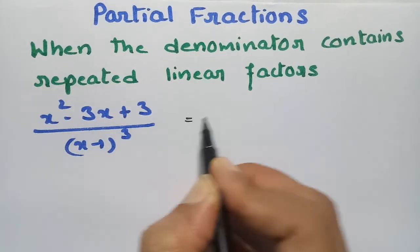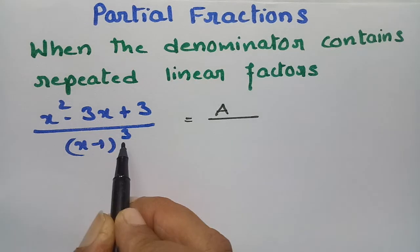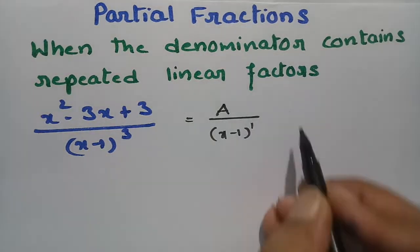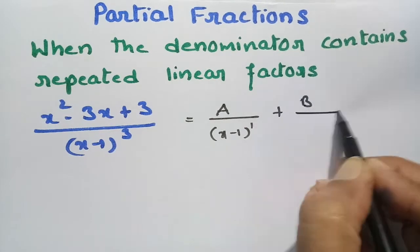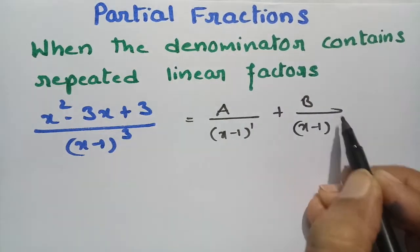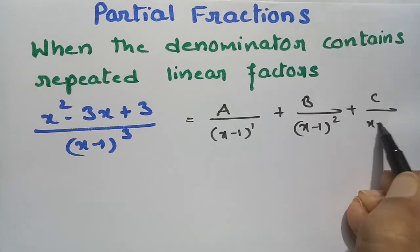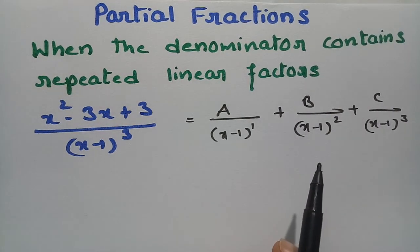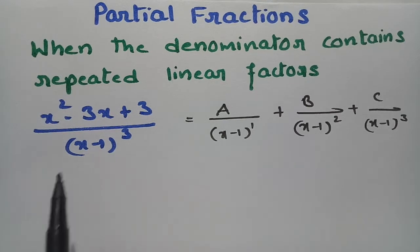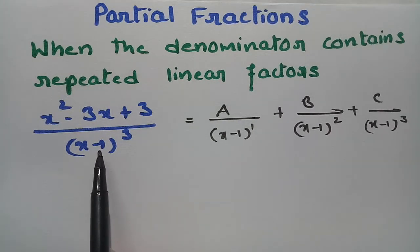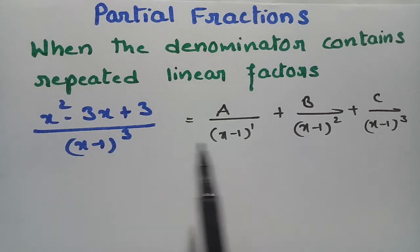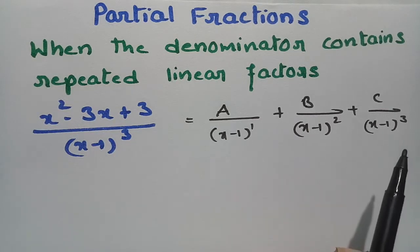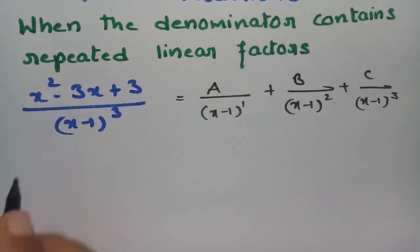We write it as A/(x-1)¹ plus B/(x-1)² plus C/(x-1)³. This is how we resolve it — this is most important. When the denominator contains repeated linear factors repeating 3 times, we take 3 constants with powers 1, 2, and 3, and then resolve as usual.